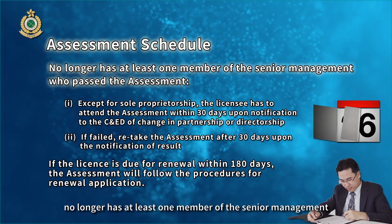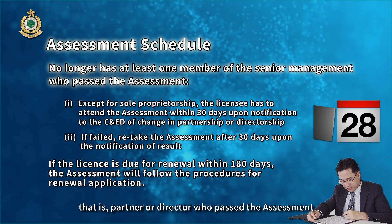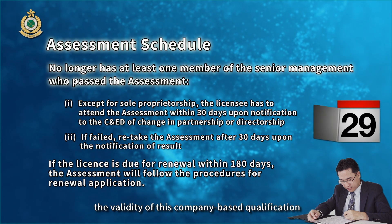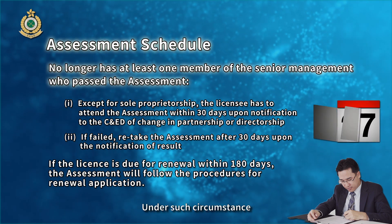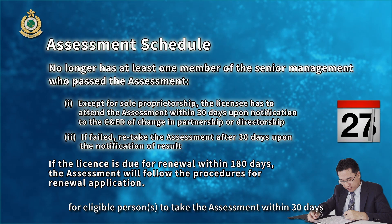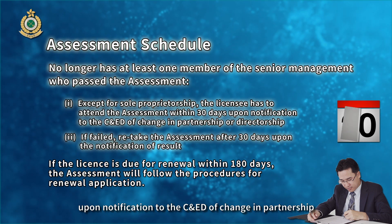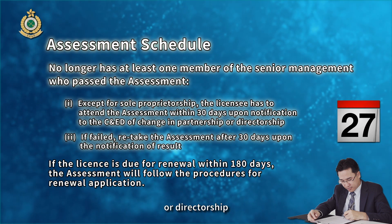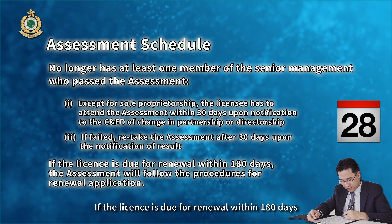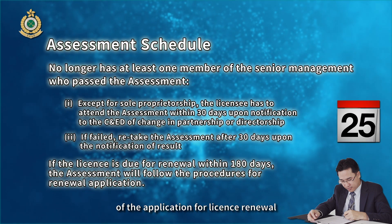When the licensee no longer has at least one member of the senior management — that is, a partner or director — who passed the assessment, the validity of this company-based qualification will be void automatically. Under such circumstance, the licensee will be required to arrange for eligible persons to take the assessment within 30 days upon notification to the CNED of a change in partnership or directorship. If the license is due for renewal within 180 days, the assessment arrangement will follow the procedures of the application for license renewal.